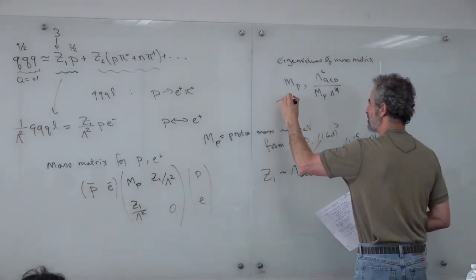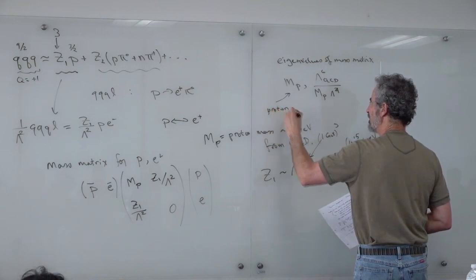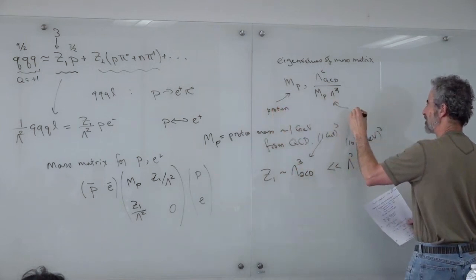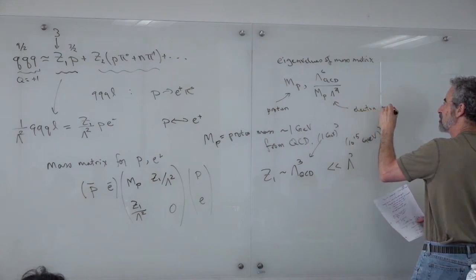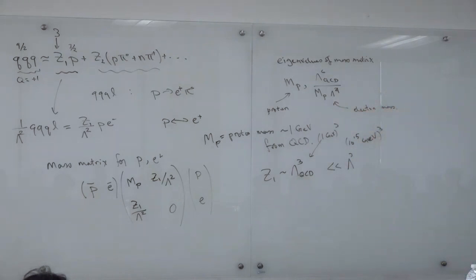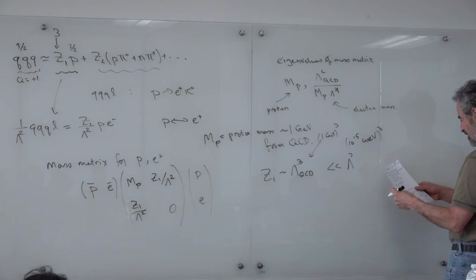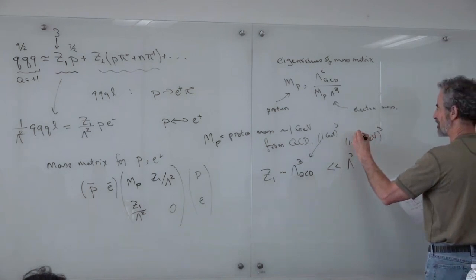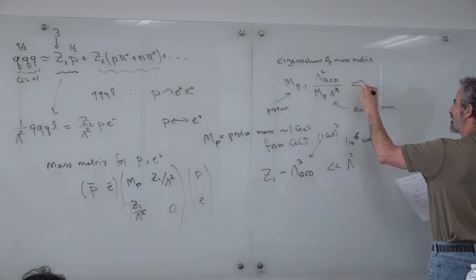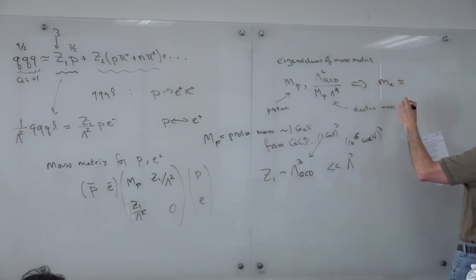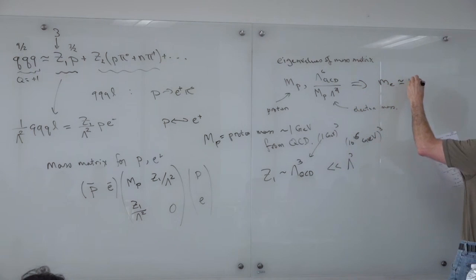The eigenvalues of this matrix are the proton mass and Λ_QCD⁶ / (m_proton · Λ²). The first eigenvalue is mostly the proton mass, and the second one is the electron mass. Even though the electron hasn't coupled to a Higgs boson, it still feels SU(2)×U(1) breaking through this proton decay operator — it's a combination of QCD and grand unification that gives the electron a mass. Putting in numbers with Λ ~ 10¹⁶ GeV, the electron mass comes out to the remarkable value of 10⁻⁶⁴ GeV.